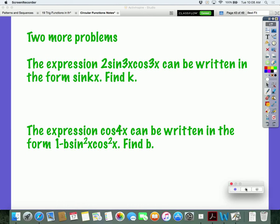All right, so two more problems. We're going to look at problems that still deal with trig identities and basically manipulating trig identities. The expression 2sin3x cos3x can be written in the form sinkx. Find k.